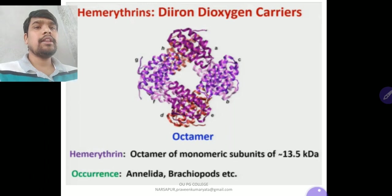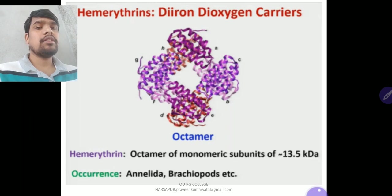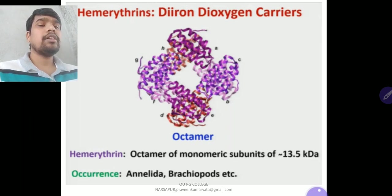Hemerythrin is a di-iron dioxygen carrier existing as an octamer of monomeric subunits of 13.5 kilodaltons. It occurs in Annelida, Brachiopoda, and some other animals. It contains iron metal.